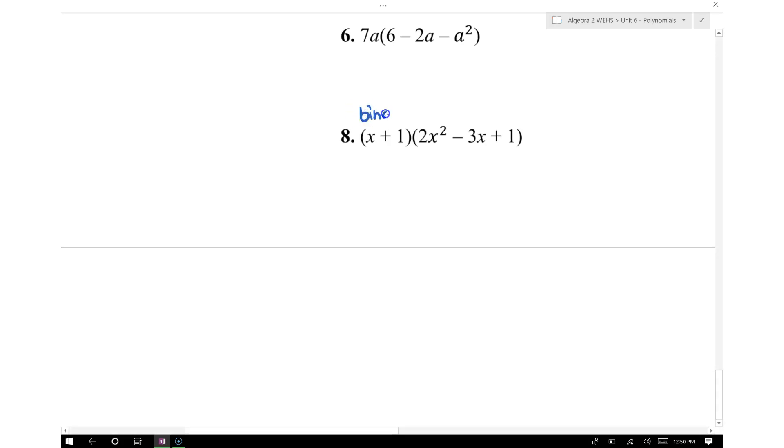What we're doing now is we're multiplying this binomial, which is x plus 1, times the trinomial, which is 2x squared minus 3x plus 1. So what we're going to do is use the distributive property.